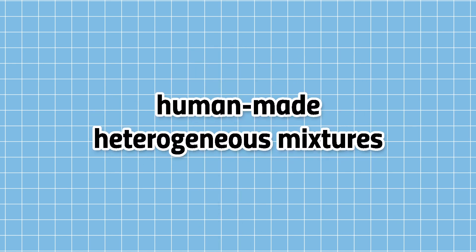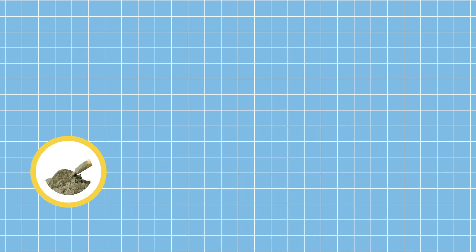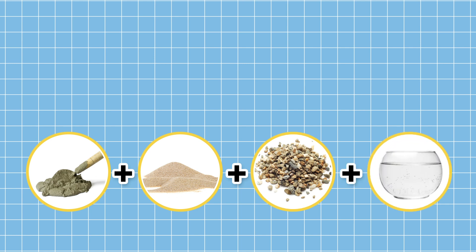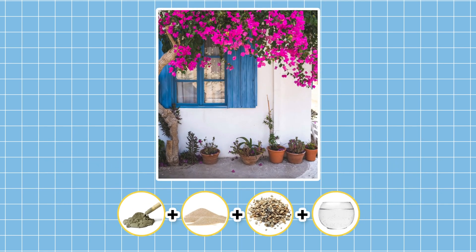There are also heterogeneous mixtures that are human-made. These mixtures do not occur naturally but are made from existing ingredients. For example, mixing different ingredients such as cement, sand, gravel, and water forms a concrete mix, which is used to make pots, walls, floors, and many more.